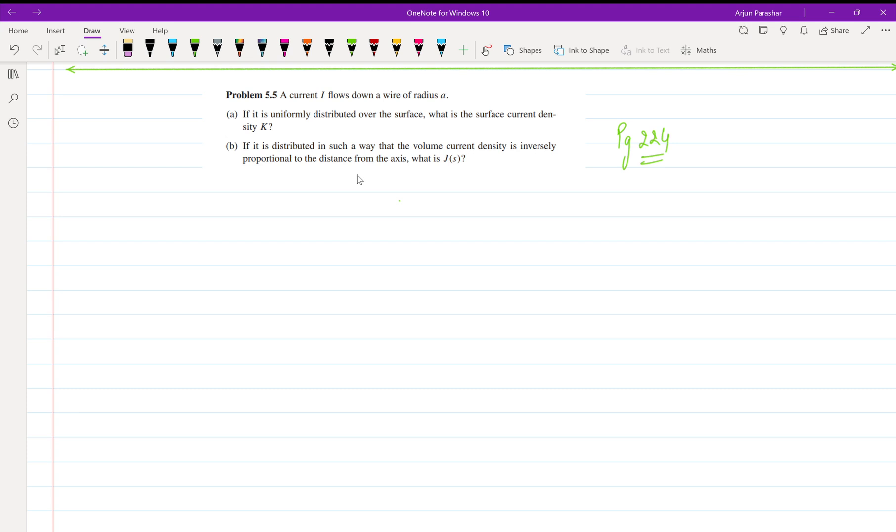Okay, so hello everyone, welcome back. Now let us start problem number 5.5 on page number 224, which says that we have a current flows down a wire of radius a. So we have a current carrying wire which is in a form of circular radius, this is of radius a, and the current is here I.